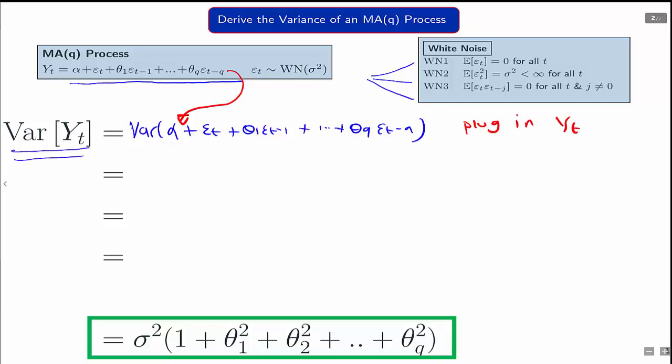Then, we can use the fact that alpha is a constant. Therefore, the variance of some variables plus a constant is just the same as the variance of the variables. So the alpha drops out here because it's fixed and constant.